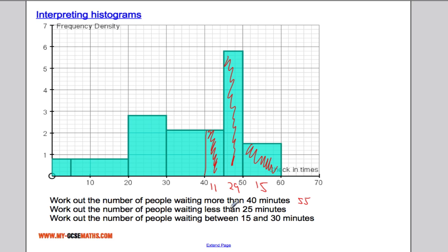Question 2. I'm asked to work out the number of people waiting less than 25 minutes. So now I'm interested in everyone to the left of this blue line here. So I'm going to need to calculate the area of this bar, the area of this bar, and the area of this bar here. So this one is going to be 5 multiplied by 0.8 which is 4. This is 15 multiplied by 0.8 which is 12. And finally this is 5 multiplied by 2.8 which is 14. Adding those together, 4 and 12 is 16, 16 and 14 is 30.